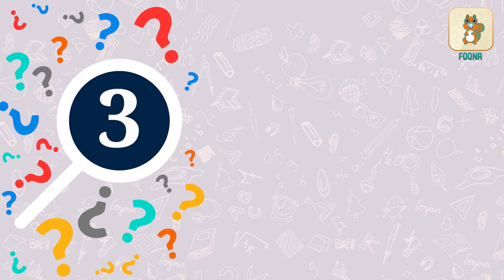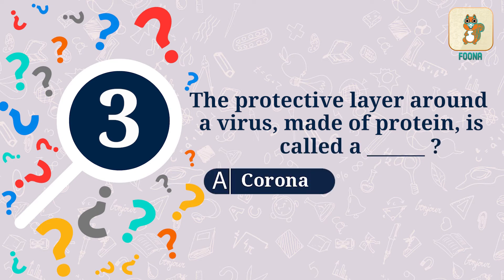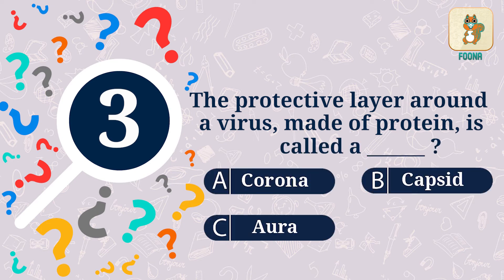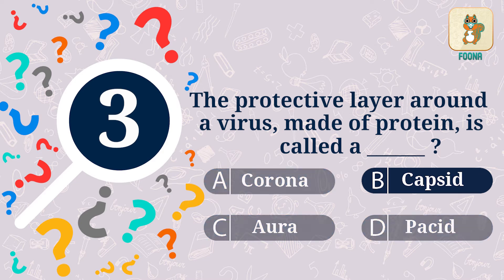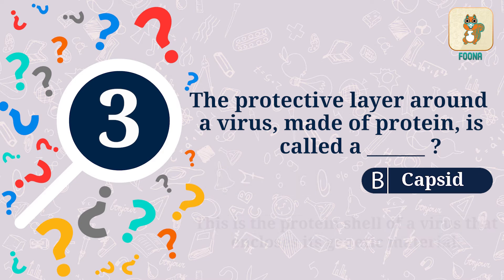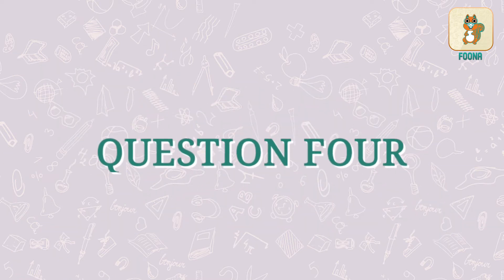The protective layer around a virus made of protein is called: A, Corona; B, Capsid; C, Aura; or D, Pacid. The answer is Capsid. This is the protein shell of a virus that encloses its genetic material.